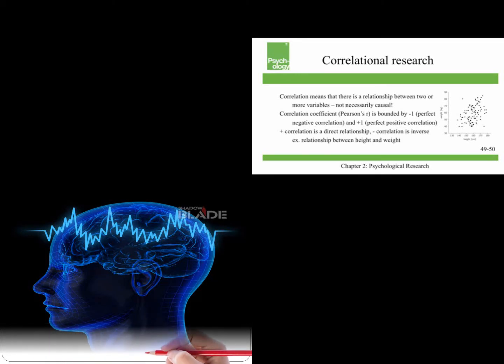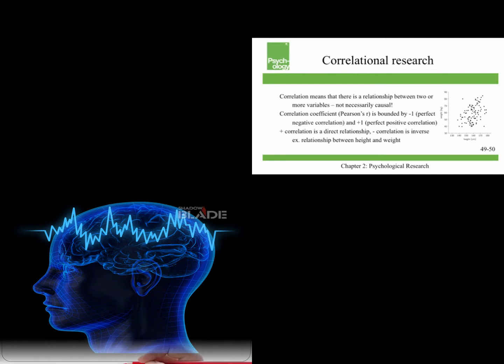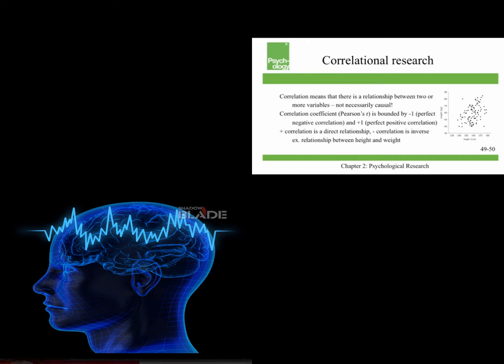A correlation coefficient, known as Pearson's r, is bounded by negative 1, which means a perfect negative or inverse correlation, and plus 1, which is a perfect positive or direct correlation. Zero means no correlation.